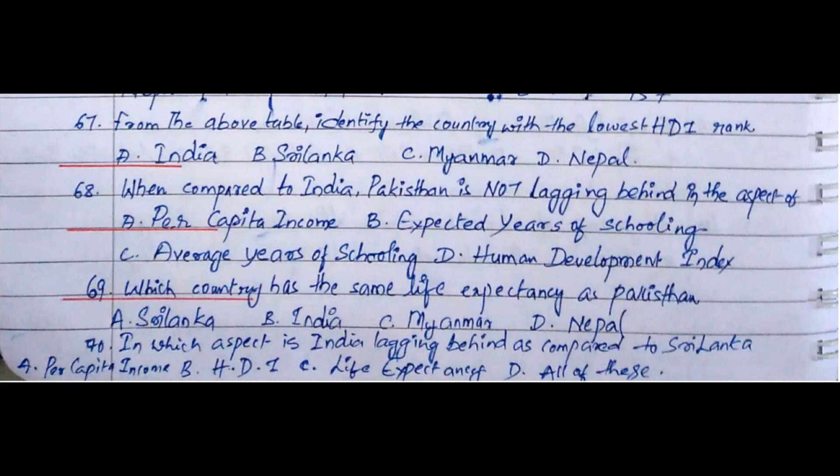Question 68: When compared to India, Pakistan is not lagging behind in the aspect of. Option A. Per capita income, Option B. Expected years of schooling, Option C. Average years of schooling, Option D. Human Development Index.